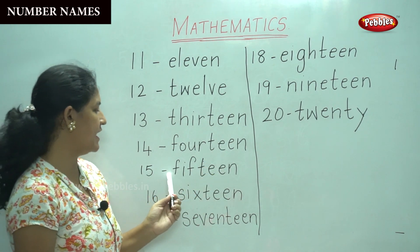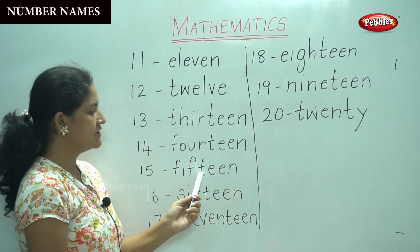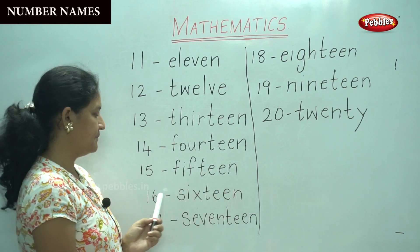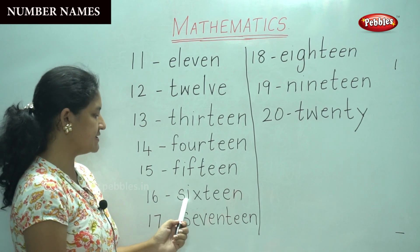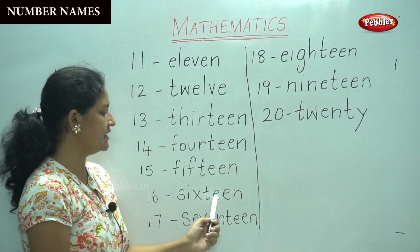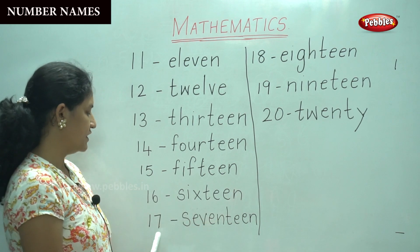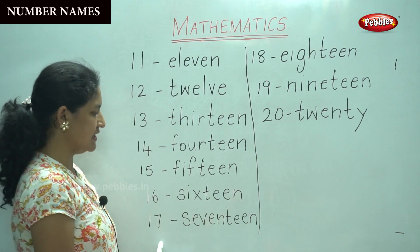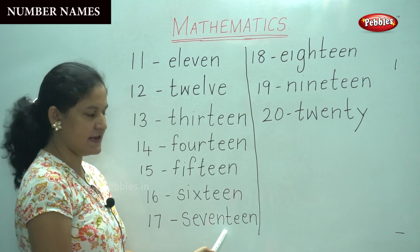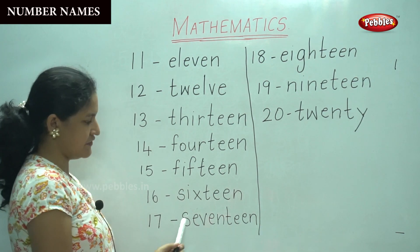15: F, I, F, T, E, E, N. 15. 16: S, I, X, T, E, E, N. 16. 17: S, E, V, E, N, T, E, E, N. 17.